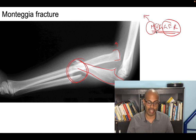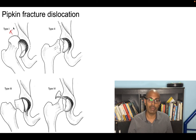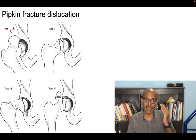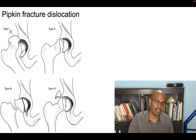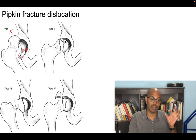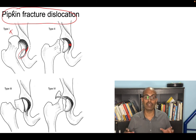Pipkin fracture dislocation is a dislocation of the femoral head — most commonly posterior dislocation of the hip. When the hip dislocates posteriorly, a small piece of the femoral head attached to the ligamentum teres remains inside the acetabulum (socket). This fragment attached to the ligamentum teres remaining in the socket is called a Pipkin fracture dislocation of the hip.